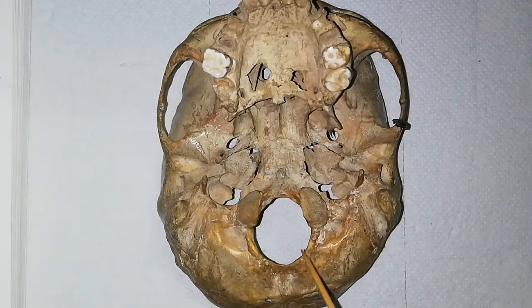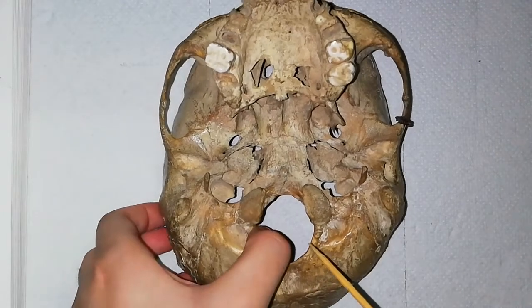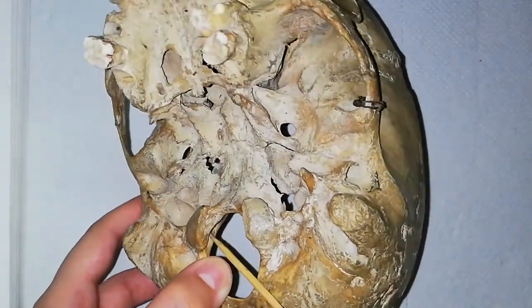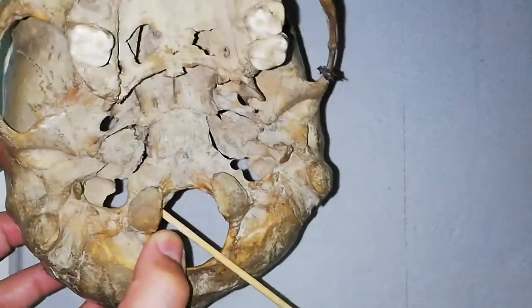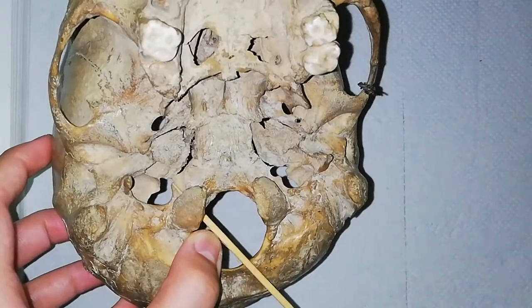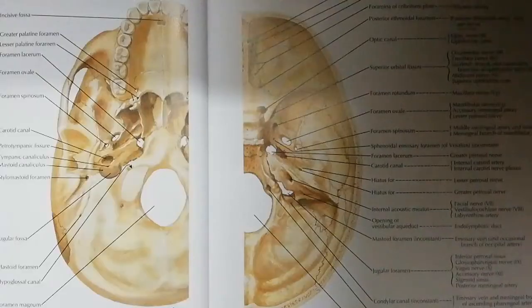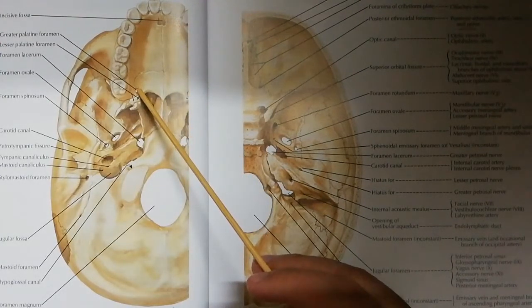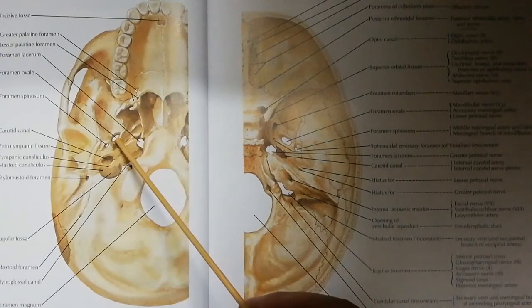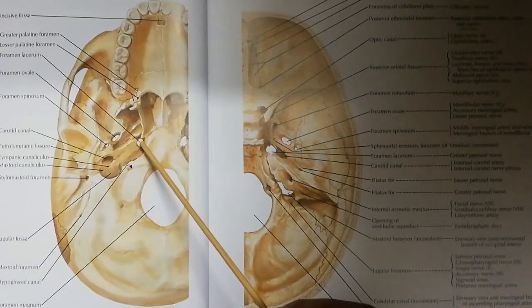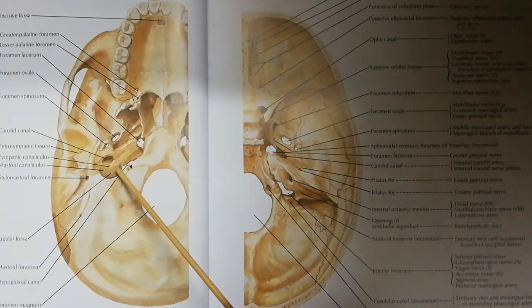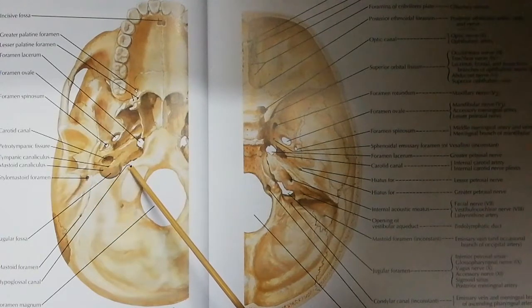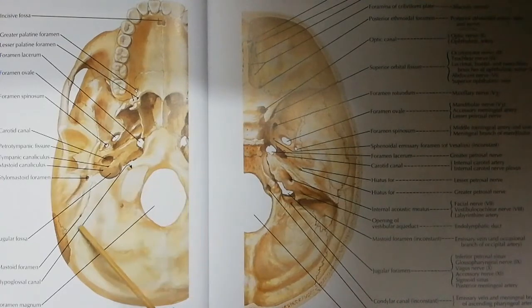The hypoglossal canal transmits the hypoglossal nerve, which is the 12th cranial nerve. In the diagram of Norma Basalis: the incisor fossa, greater palatine foramen, lesser palatine foramina, foramen ovale, foramen spinosum, foramen lacerum, carotid canal, jugular fossa, stylomastoid foramen, hypoglossal canal, foramen magnum, and the mastoid foramen are all identified.